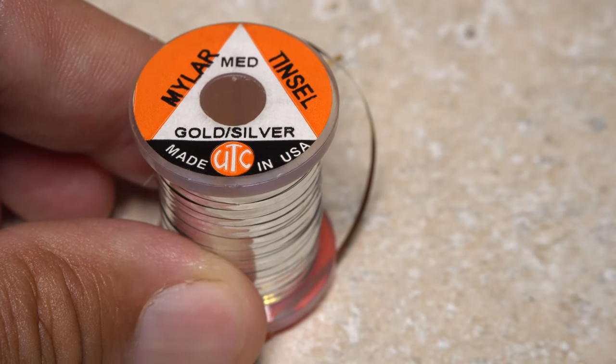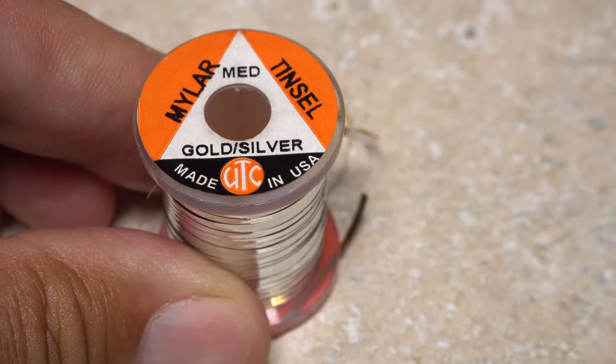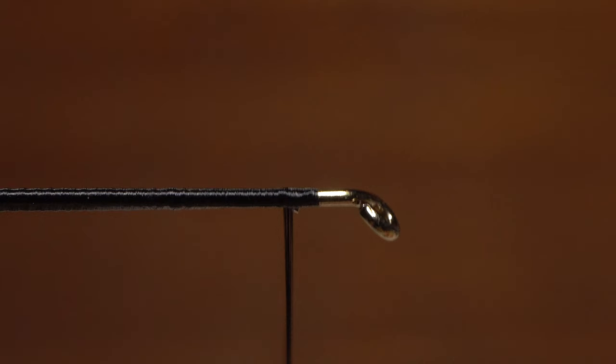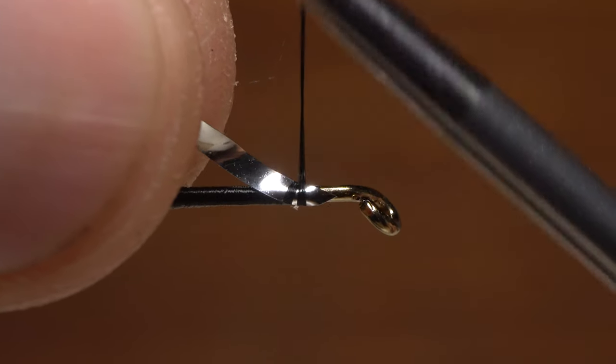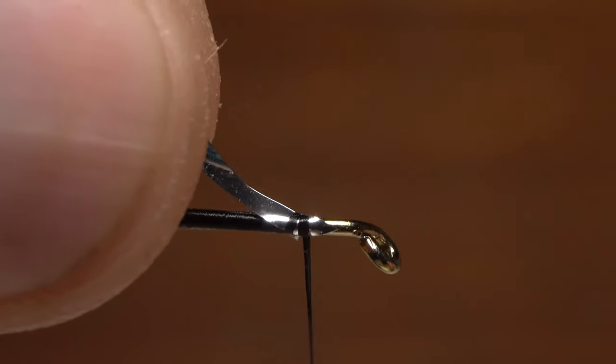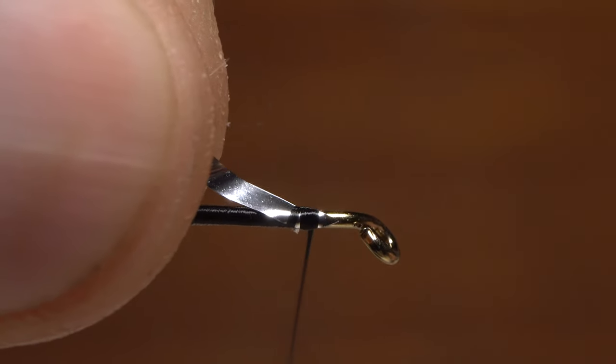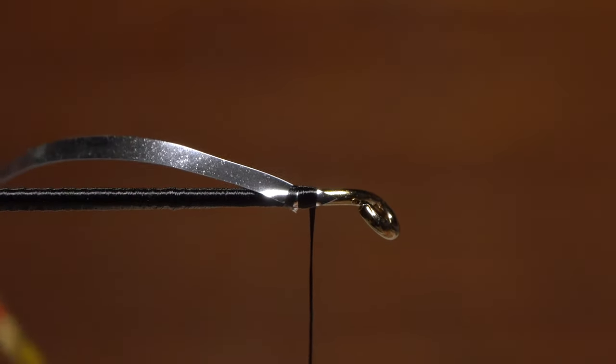Medium-sized gold silver Mylar tinsel is used to create the body of the fly. Snip a good 7-inch length from the spool to make sure you have enough. Trim one end off at an angle and lay the tinsel against the near side of the hook with the silver side facing you. Take a few nice tight thread wraps to secure it.